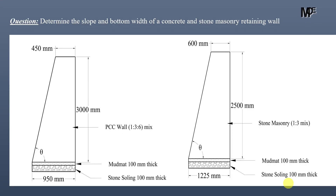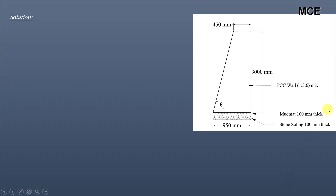Hello and welcome back to Master Civil Engineering. In this video you will learn how to find the slope and the bottom width for a concrete and stone masonry retaining wall when we already know the top width of the wall. We will learn this for four different walls in both SI units as well as US conventional units. First I am taking this PCC wall.